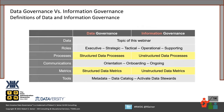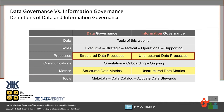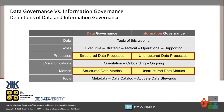When we look at data governance versus information governance side by side using each of those six core components, the data component is the topic of this webinar — the difference between data and information. The roles are going to stay the same, the communications are going to stay the same. You're going to need to orient people to the concept of governance, onboard them, and provide ongoing communication. The tools are somewhat the same — you've got metadata about unstructured data too, and a lot of the data catalog tools have the capability to collect metadata about unstructured data. We need to focus on the structured data processes and the unstructured data processes and define the differences and how we're going to measure effectiveness.